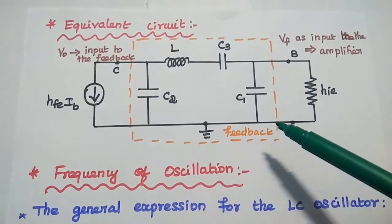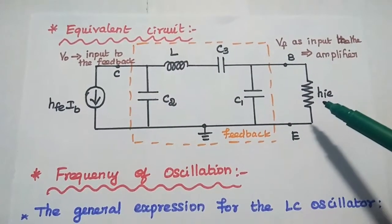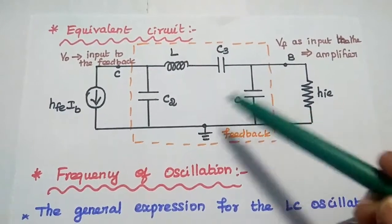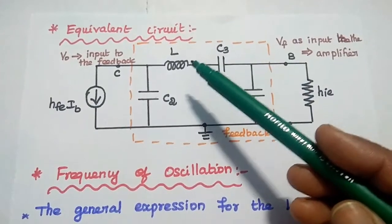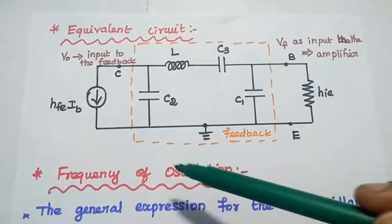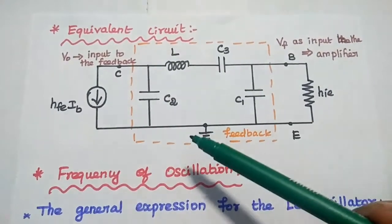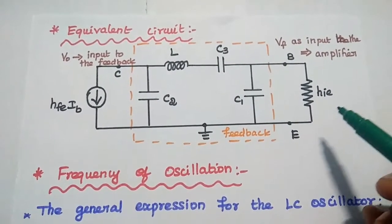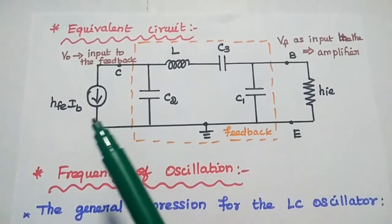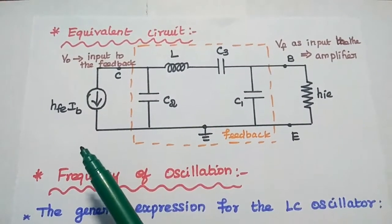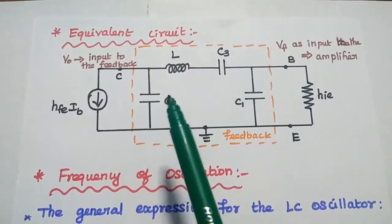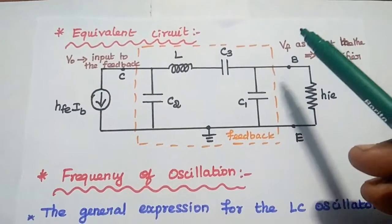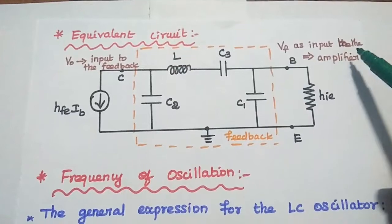This is the equivalent circuit of the CLAP oscillator. It has an amplifier circuit and a feedback circuit. In the feedback, it has C1, C2, and C3 in series with the inductance L. The amplifier values are HIE and HFE·IB, where HIE is the input impedance of the amplifier and HFE·IB is the output of the amplifier. The output of the amplifier is given as input to the feedback network, and the feedback signal VF is returned to the amplifier.